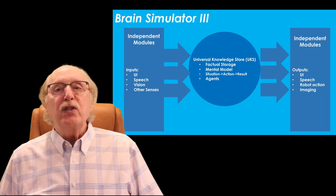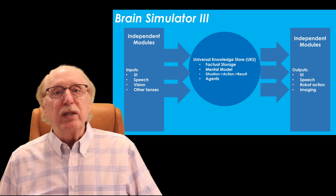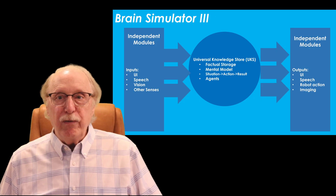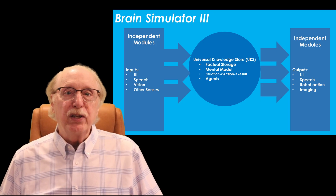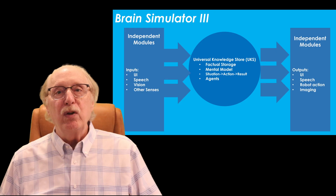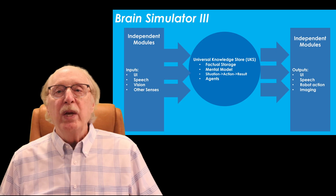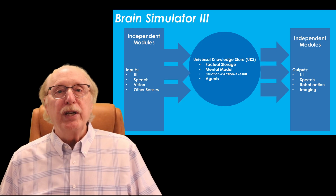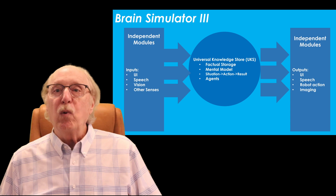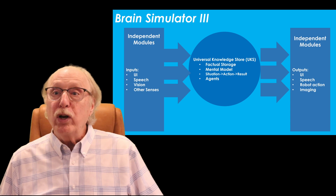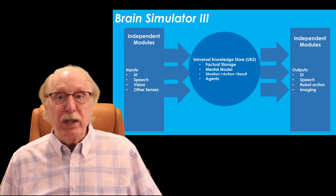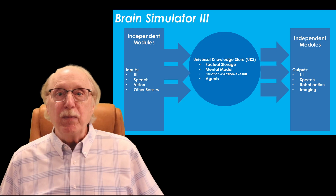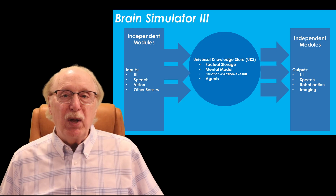This design is critical because a realistic brain-like system can't afford to process information in a single-file queue. In the brain, vision, hearing, touch, and motor control are all working at once, constantly feeding and retrieving from the same mental model.